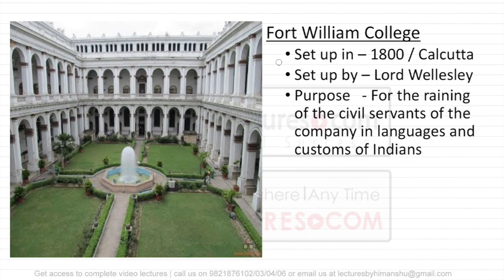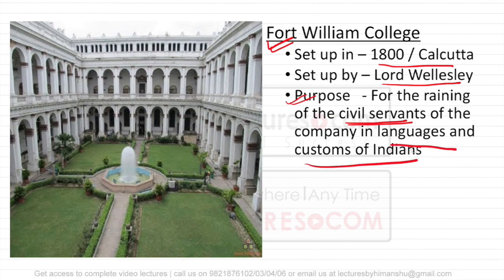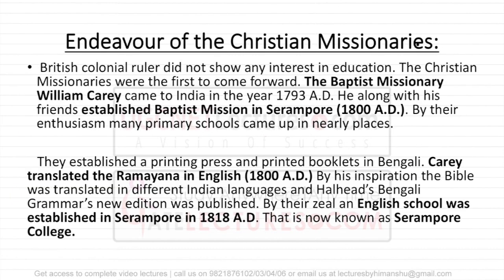Fort William College was established in 1800 AD at Calcutta, again set up by Lord Wellesley. The purpose was mainly for training civil servants. It was like a production factory for civil servants, where they were taught different languages and customs, because civil servants had to deal with different people and different populations.